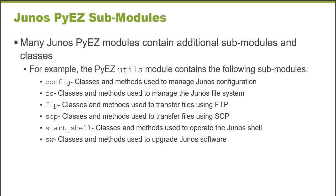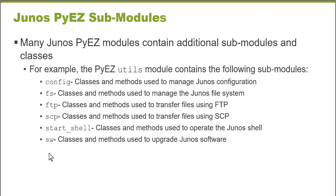The Junos PyEZ Python library is a collection of modules, and some of these modules contain submodules. For example, the Junos PyEZ Utils module contains a series of submodules. The config submodule can be used to perform Junos device configuration operations. The file system module can perform Junos file system operations. There are also the FTP and SCP modules used to transfer files to and from Junos platforms. This Learning Byte will focus on using the SCP module. The start shell module can be used to issue Unix shell commands or Junos CLI commands, and the software module can be used to perform software upgrades and also power off and reboot devices.